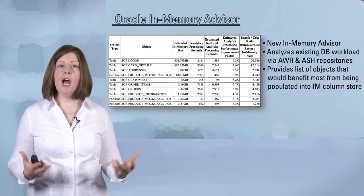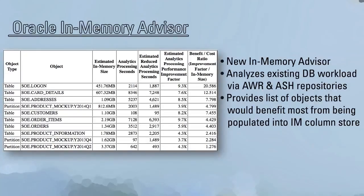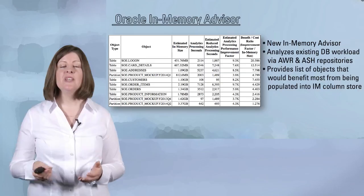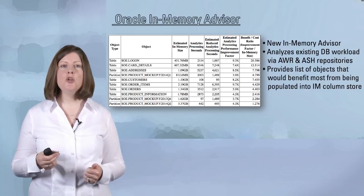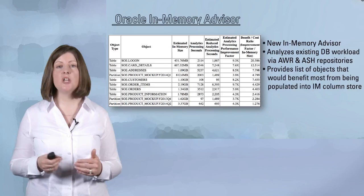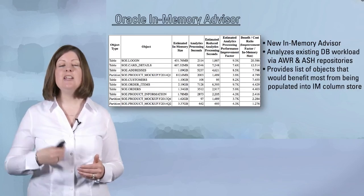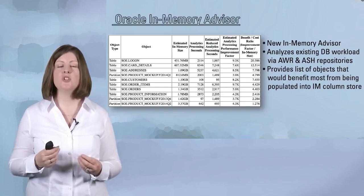If you're not sure which objects you want to populate into the column store, there is a new In-Memory Advisor. It will look at your existing AWR and ASH repositories and determine which objects would be good candidates for the column store. It's going to give you a prioritized list of those objects, let you know what kind of performance benefit you'll get by populating them, and it will also tell you what kind of compression you can expect.